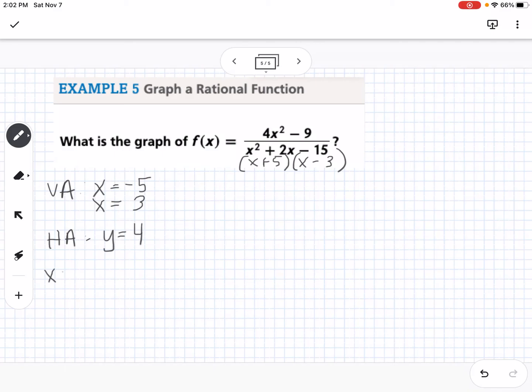My horizontal asymptote: I have 4x squared over 1x squared, so it would be y equals 4. For my x intercept, I'm going to set the numerator equal to 0. It's a difference of squares, so it's 2x plus 3 and 2x minus 3. I'm going to have two x intercepts at positive 3 halves and negative 3 halves, or 1.5 and negative 1.5. My y intercept, if I plug in 0 for all the x's, I get negative 9 over negative 15, which reduces to 3 fifths.